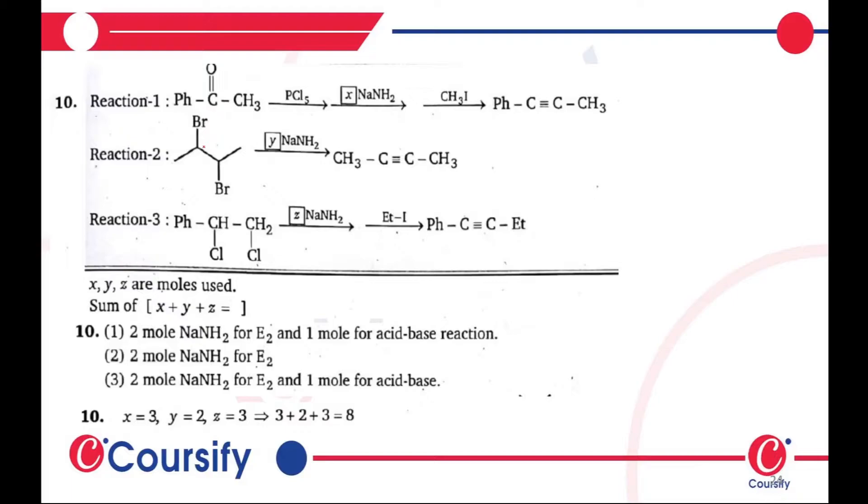CS3 is added there. Alkyne is added there, and first of all it will be chlorination. After that, NH2 - 2 moles of NaNH2 and 1 mole of acid-base reaction. 2 moles of NaNH2 and E2 reaction, so E2 reaction will be added because of NaBR.